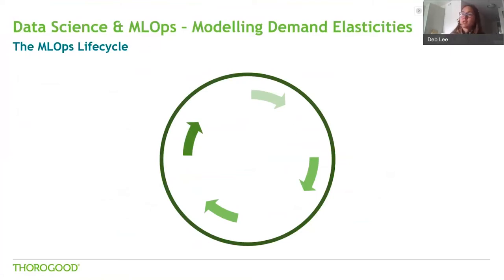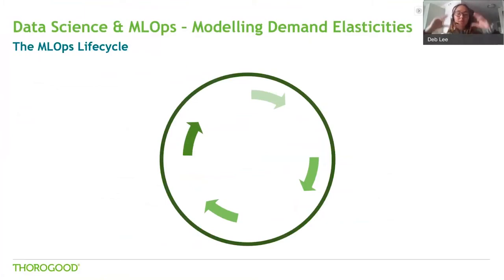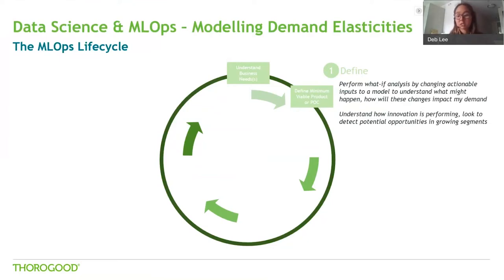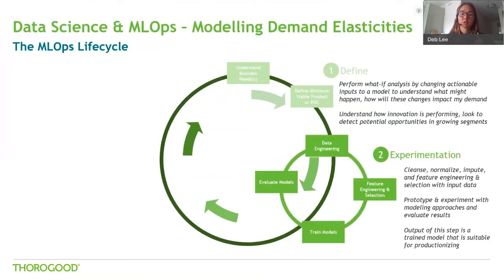Typically when you're getting started on these types of engagements from an MLOps perspective, it's useful to outline how we actually go about creating these types of systems and what you need to be thinking about — even as you're getting started — around getting a product itself into production and keeping it there and making it continuously useful for your end users. You're going to start by defining your business problem: what are your business needs, and what are the minimum requirements for an MVP or POC from a data science perspective? We want to perform what-if analysis by changing inputs to a model and understand what might happen.